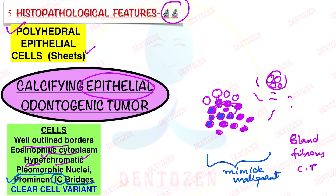Sometimes these cells do not present with eosinophilic cytoplasm, but instead show a clear vacuolated cytoplasm with a nucleus that is round to oval, lying in the center or pushed against the membrane. This is called the clear cell variant of CEOT.